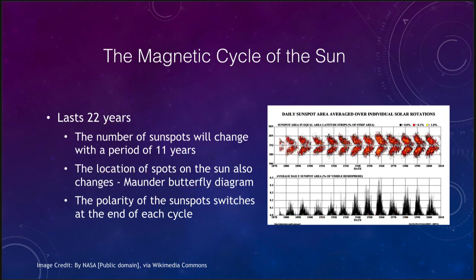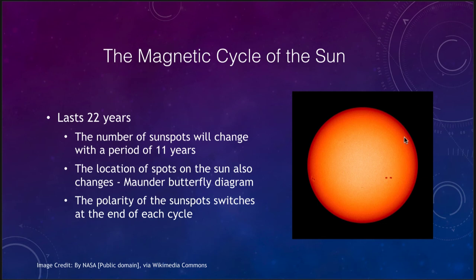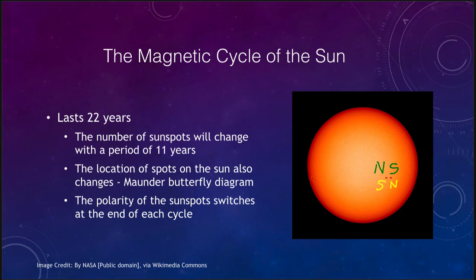When we look at some of these sunspots, we see that they tend to come in pairs. In one cycle, you'd have perhaps the north spot leading and the south spot trailing. If we wait one more cycle — after 11 years — then we get the south spot leading and the north spot trailing. And after another cycle, we get back to the original arrangement. Because of this, we call the entire cycle 22 years long, even though the number of sunspots comes and goes every 11 years.